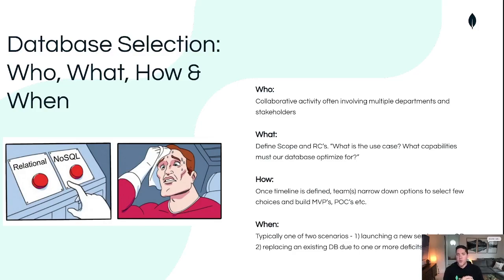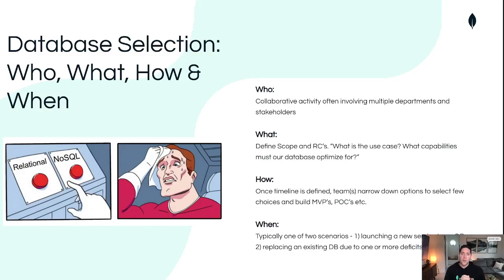So how is this done? Typically, once we've defined our application and the requirements we have for the database, there will be a process of elimination. The teams and stakeholders that are involved will collaborate to narrow down to a select few solutions. And then from there, the development teams will go about building out MVPs — minimum viable products — to basically prove out the functionality and assess the performance between the chosen solutions to make a decision.